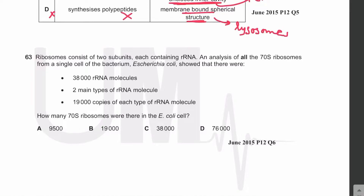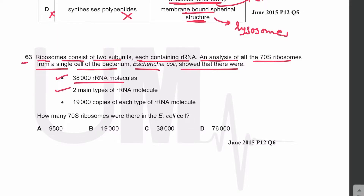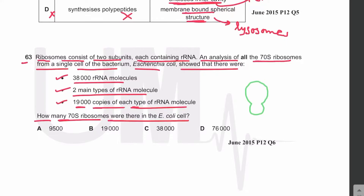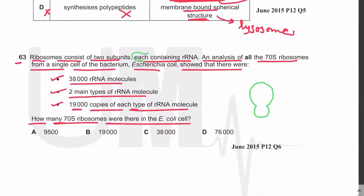MCQ 63: Ribosomes consist of two subunits, each containing ribosomal RNA. An analysis of all the 70S ribosomes from a single cell of E. coli showed 38,000 ribosomal RNA molecules, two main types, and 19,000 copies of each type. How many 70S ribosomes were there in the E. coli cell? Each ribosome has two subunits, and each subunit contains one ribosomal RNA.